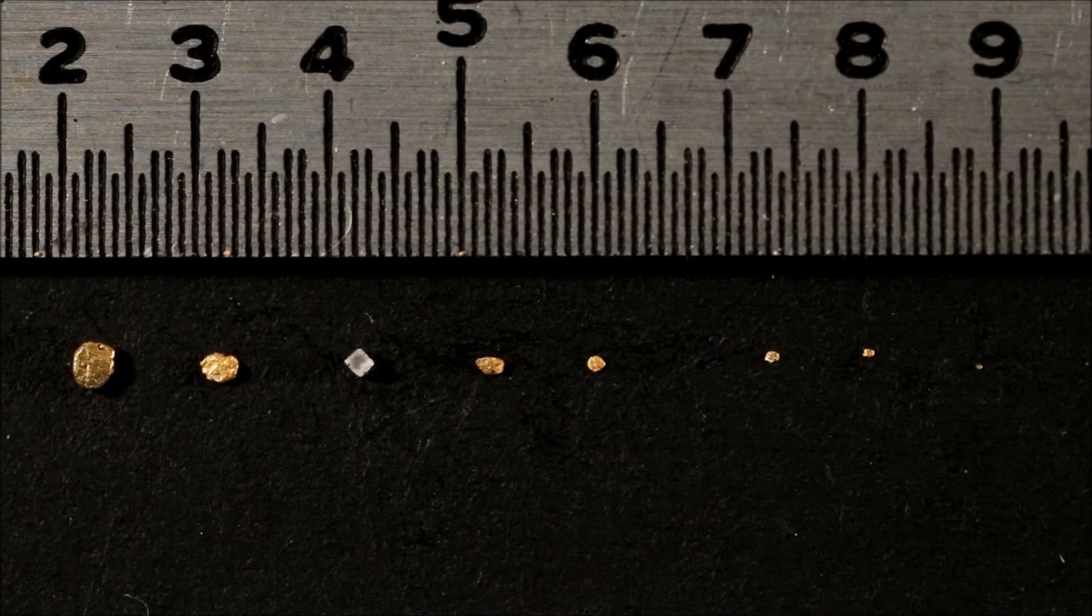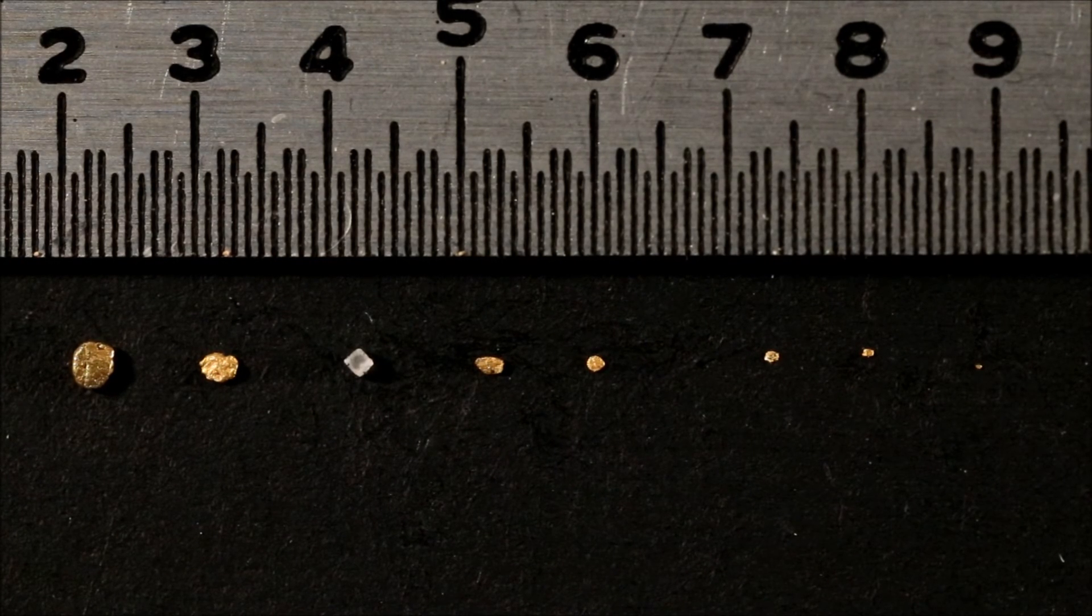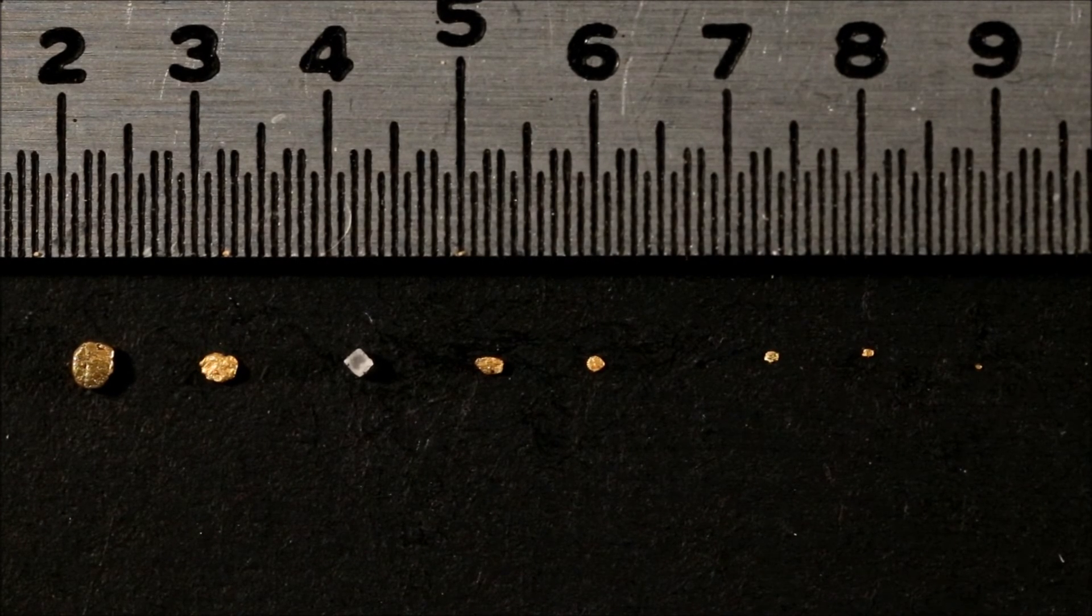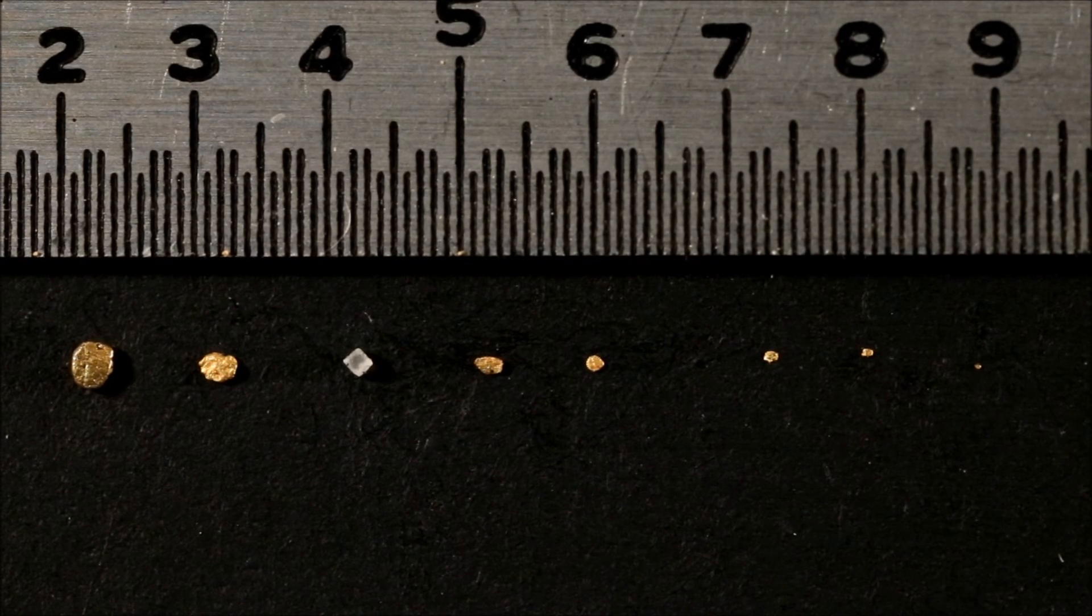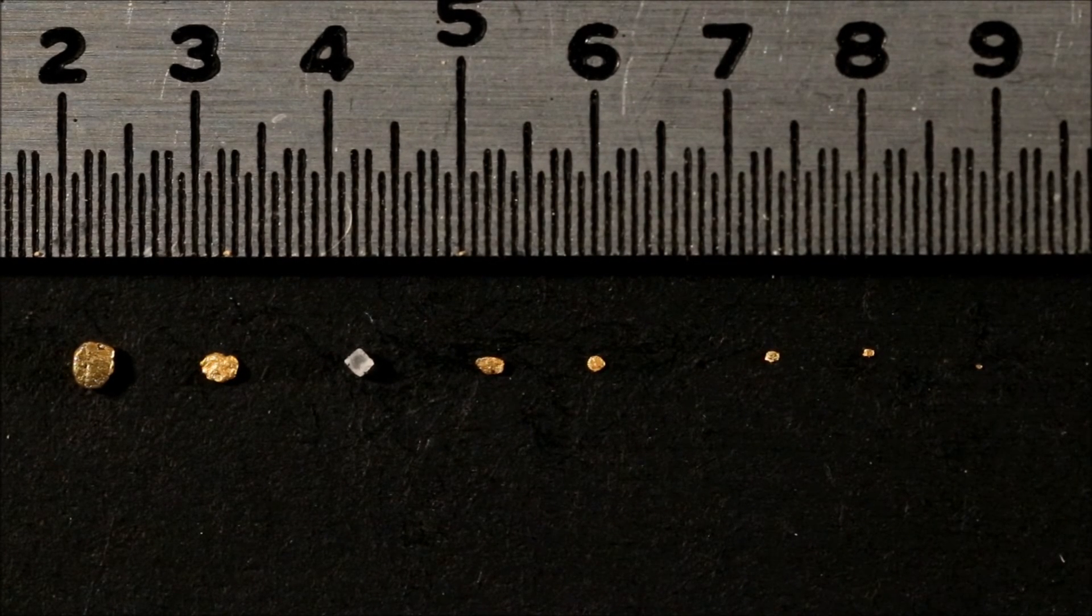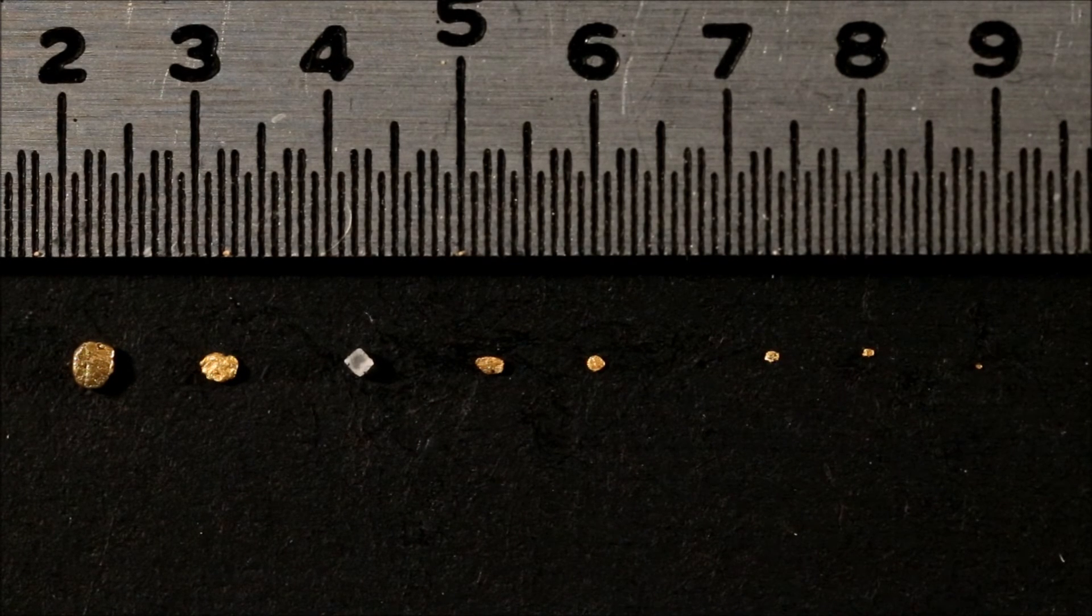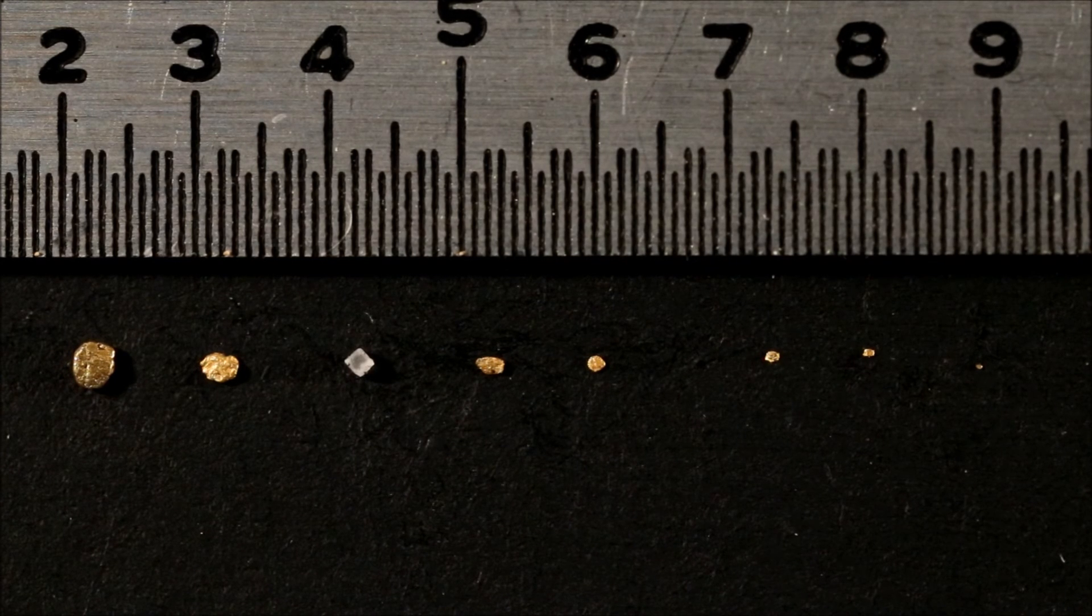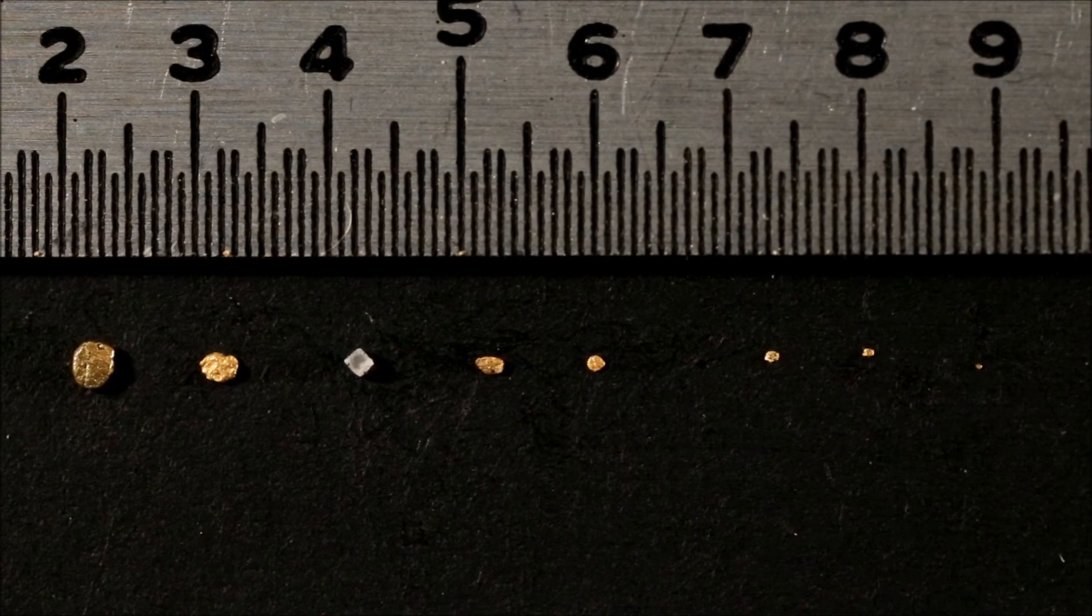But starting from the left, we have a 20 mesh piece of gold. Next over is 30 mesh. Then we have our grain of salt, which is just slightly bigger than 50 mesh. The piece of gold just to the right of the grain of salt is a 50 mesh. Next we have a 70 mesh. And then we have 3 pieces, which start at 100 mesh. The middle of the 3 is probably a 150 mesh.